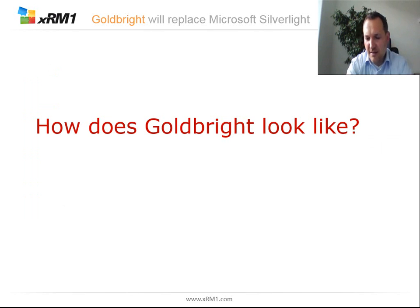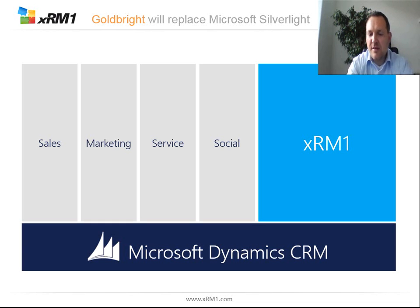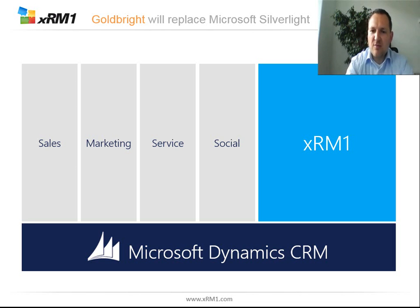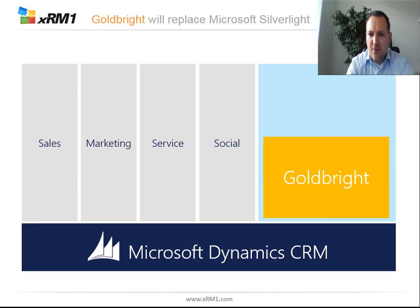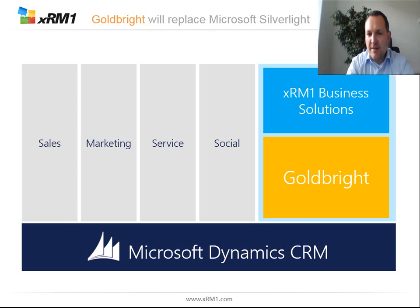How does Goldbrite look? Here you can see the Dynamics CRM platform at the bottom with its regular modules — sales, marketing, service, and social. XRM1 business solutions sit alongside all existing modules, and within that layer, Goldbrite is built on four components: JavaScript and TypeScript, HTML5, plugins, and process actions. On top of the Goldbrite technology layer, we place our business solutions, where all real business logic and UI are supported by these Goldbrite features.